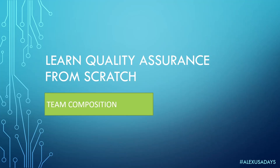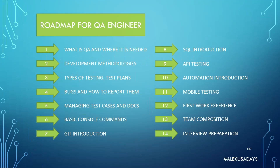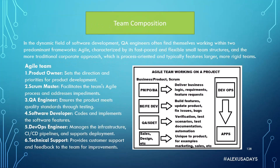Hey everyone, this is Alex. Let's talk about team composition — we're in module 13. When you start working in the field, there are different ways things might be organized: different types of agile, different mixes of approaches. Most likely you're going to see two major things: you might get into a team which is small and flexible, or you might get into a corporate structure.